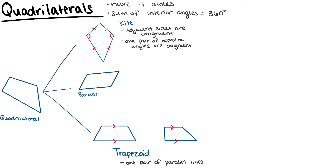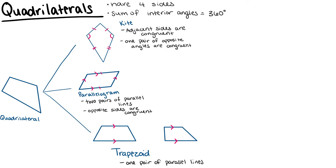Another type of quadrilateral is a parallelogram. Parallelograms have two pairs of parallel sides. The top and the bottom sides are parallel, and the right and left sides are parallel. Additionally, parallelograms have two pairs of congruent sides. The top and bottom sides are also congruent, and the right and left sides are congruent to each other. This applies to its angles as well — the opposite angles within parallelograms are congruent.